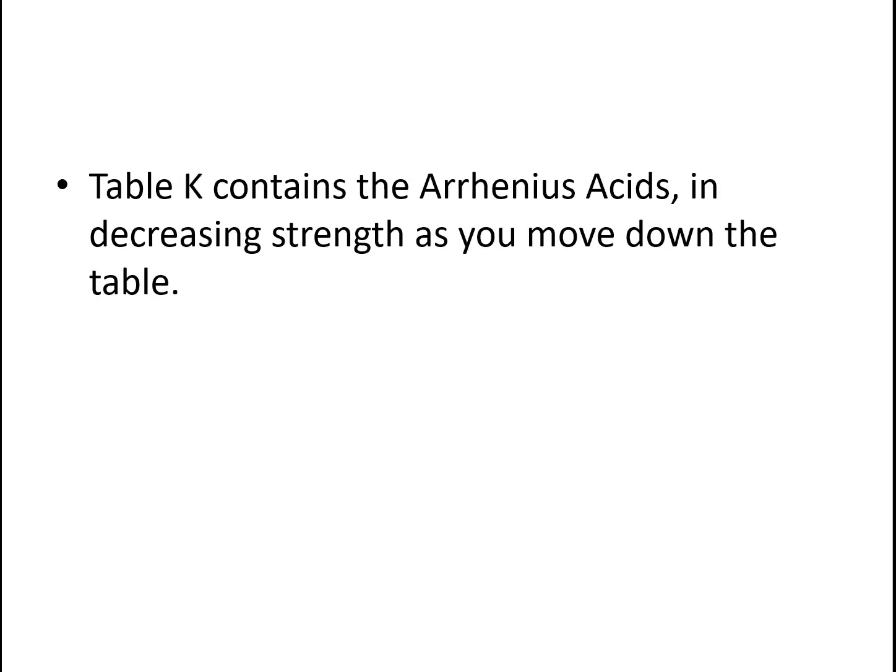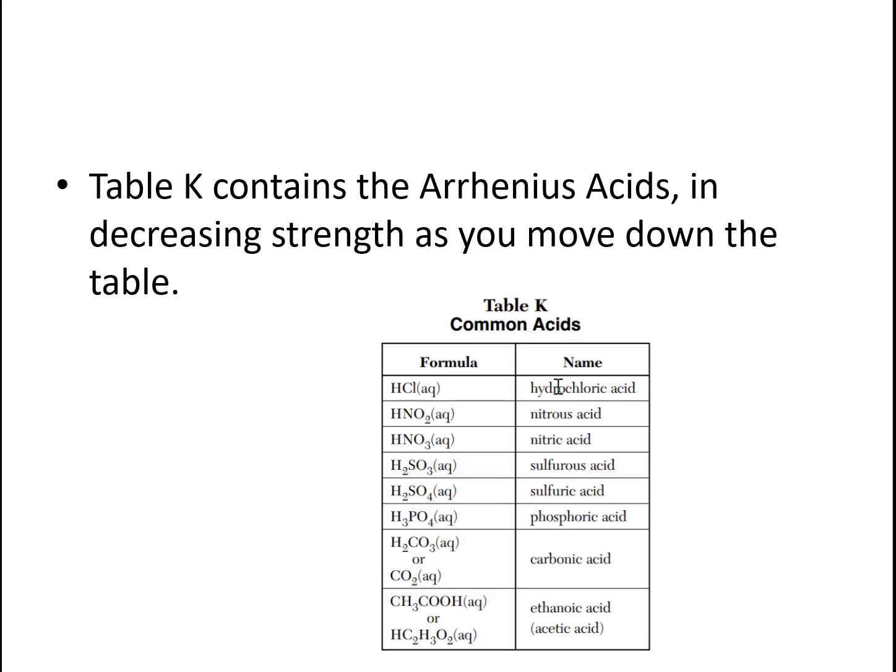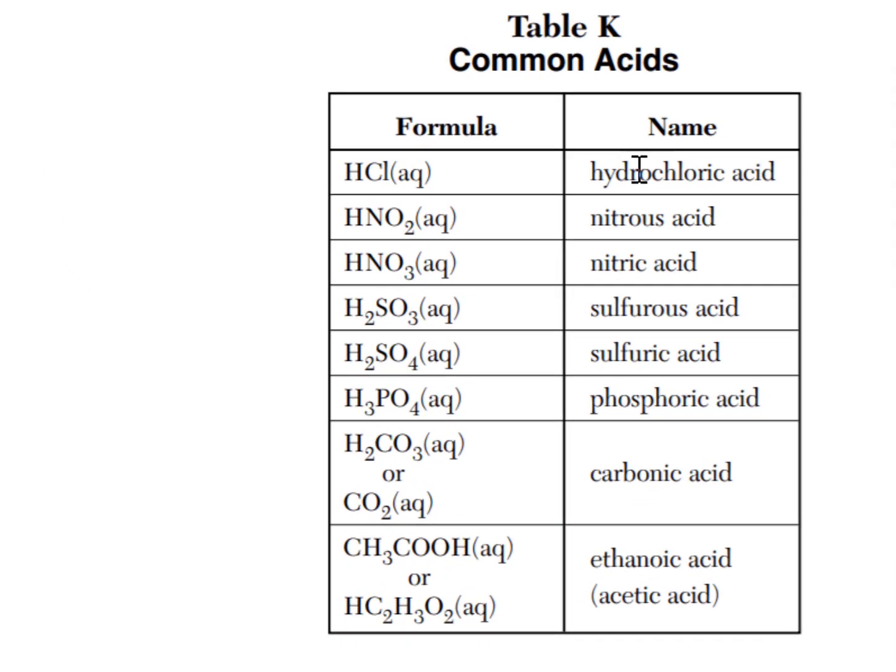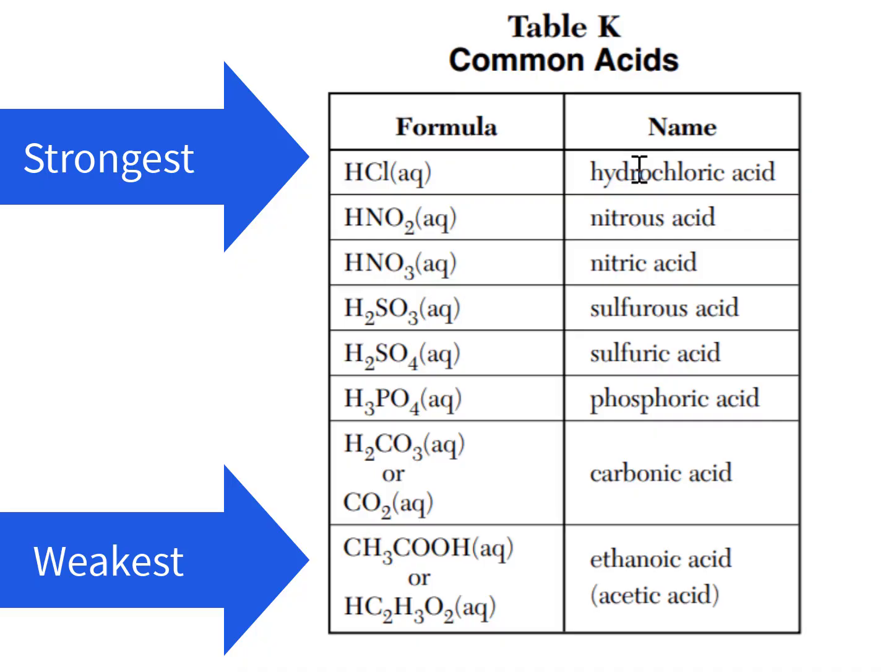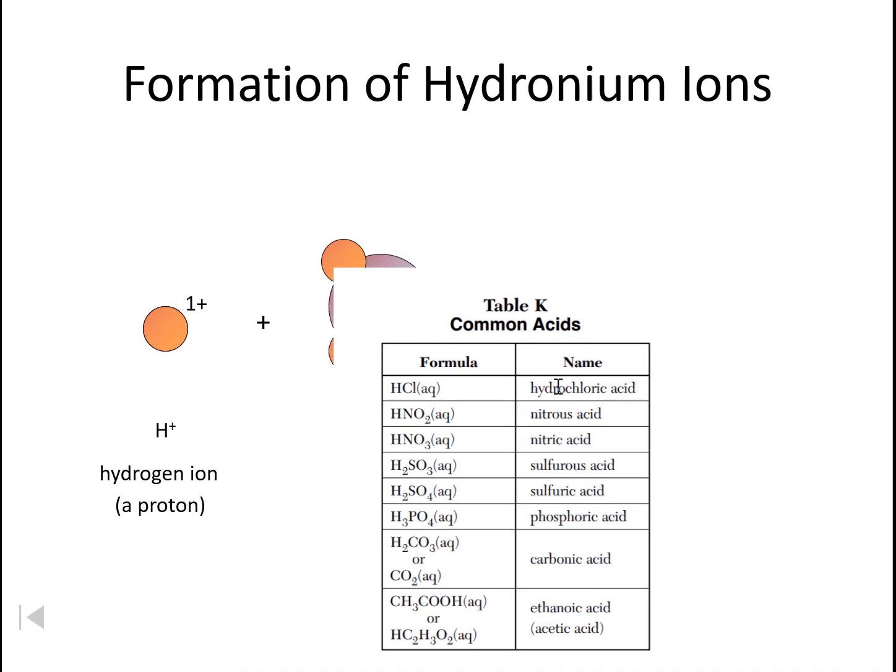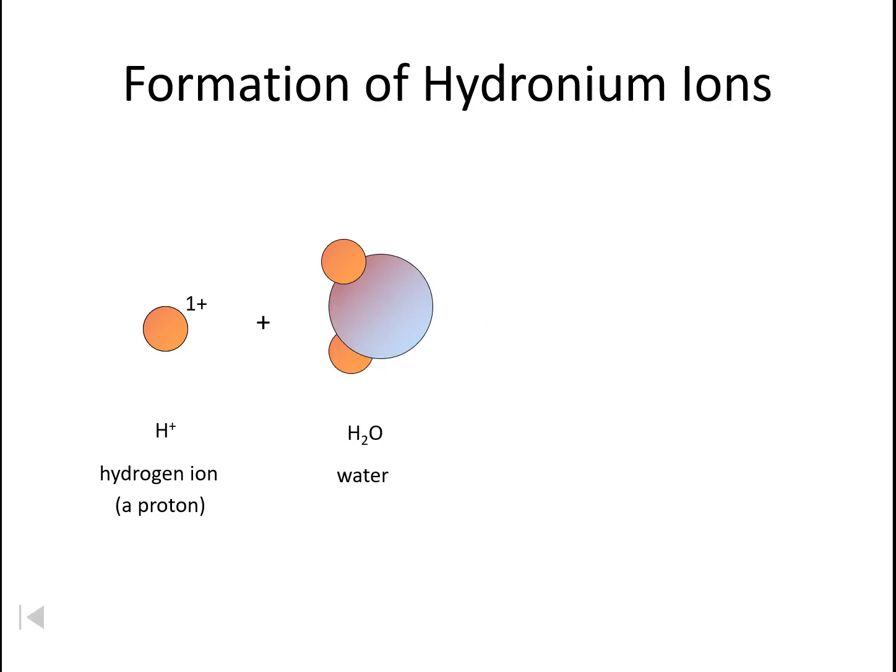Once again, table K contains your Arrhenius acids and they are in order of decreasing strength as we move down the table. As we go down, we go from strong acids to weak acids. The strongest acids are at the top. This is just showing you that formation of a hydronium ion again. You might have picked up this is kind of important stuff.